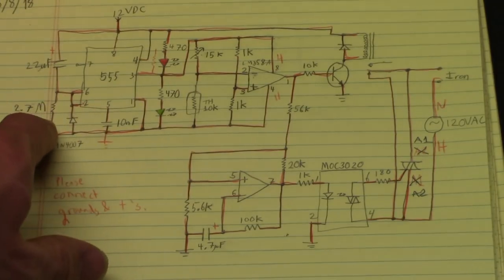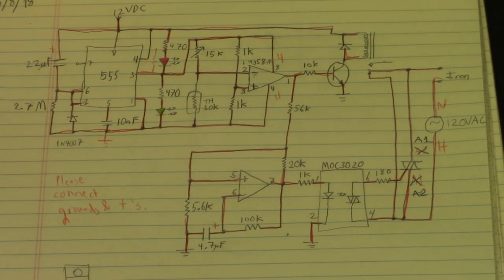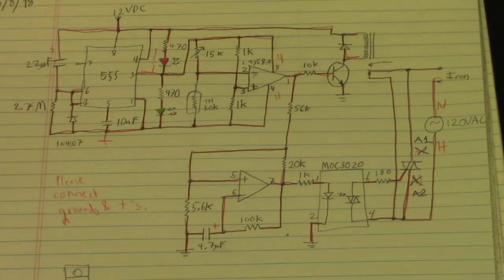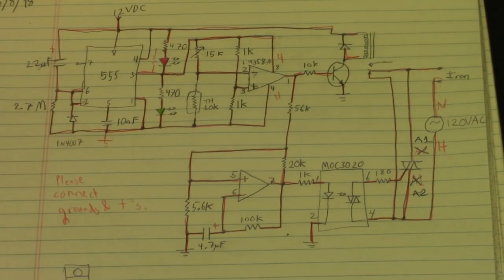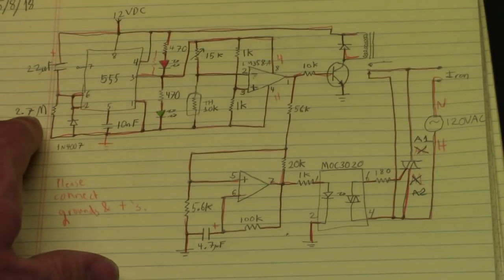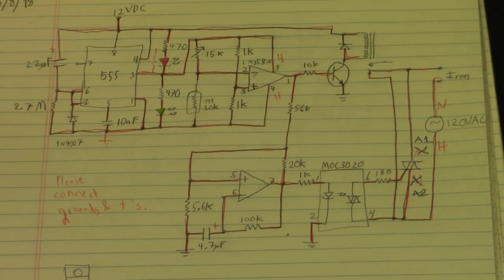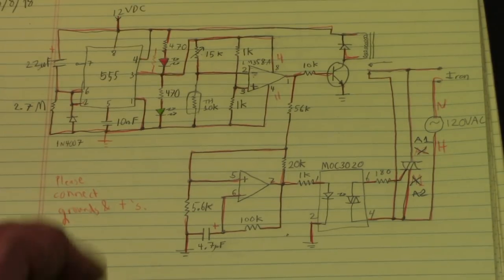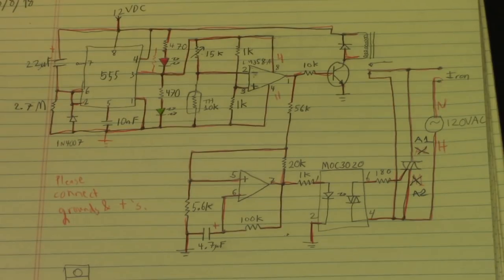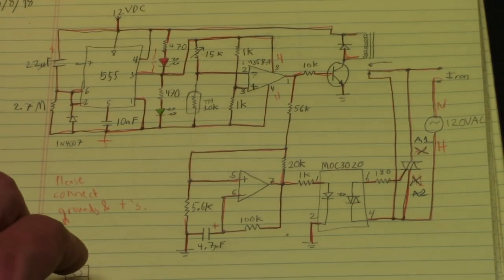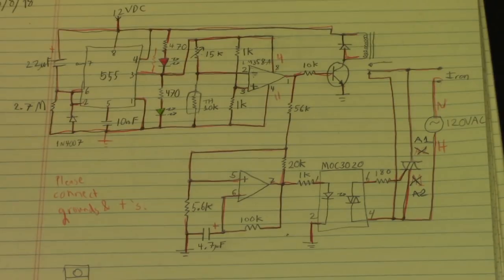I also changed the values here which gives me roughly from what I timed a little bit over a minute and a half, almost 3 minutes of warm-up time on the soldering iron. The 2.7 mega ohm resistor there and 22 microfarad capacitor ended up giving me what I wanted when I tested it on the breadboard. The original values were a little short for my soldering iron.